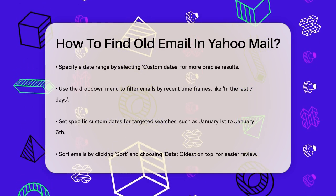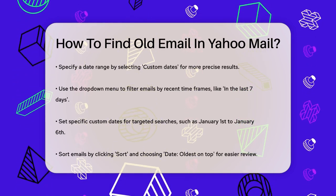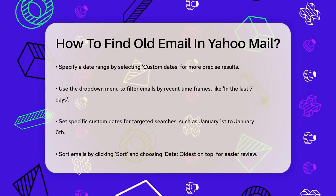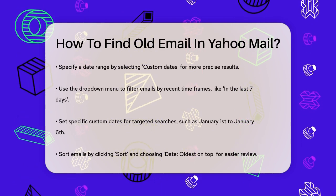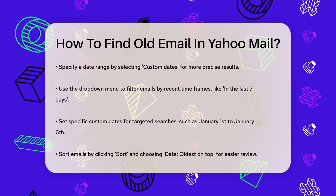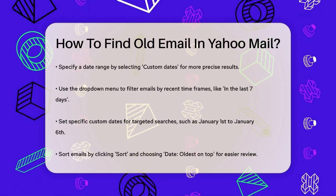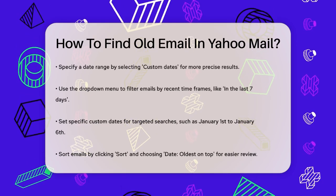If you prefer to see your oldest emails first, click on the Sort option above your messages and select Date, Oldest on top. This will display your emails starting from the earliest ones, making it easier to review them.